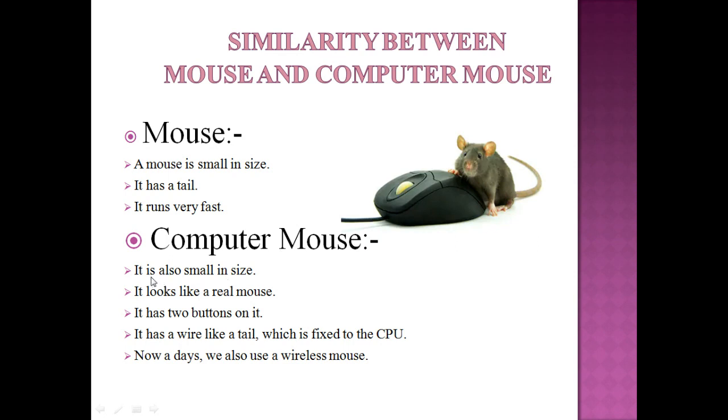It is also small in size. It looks like a real mouse. It has two buttons on it. It has a wire like a tail which is fixed to the CPU. CPU means central processing unit. But nowadays we also use a wireless mouse.